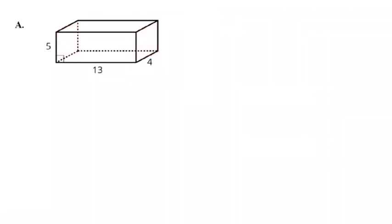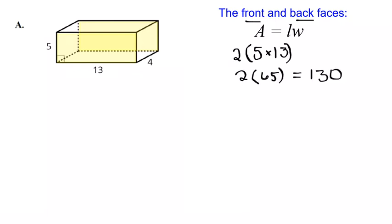So first let's just do the front and the back. So with prisms, with rectangular prisms, it's always about the pairs, so the front and the back are identical rectangles. There's your rectangle area formula. They're both 5 by 13 rectangles, so that would be 65 a piece, which is 130 for the two of those.